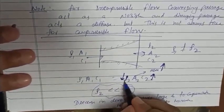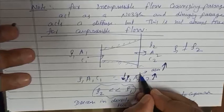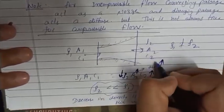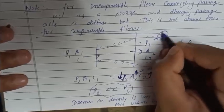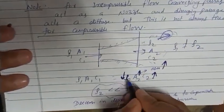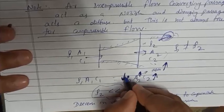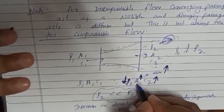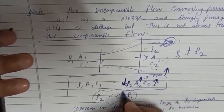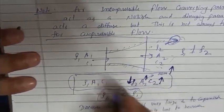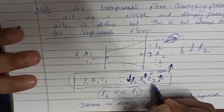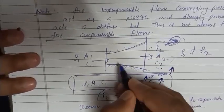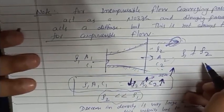In compressible flow, three parameters — density ρ2, area A2, and velocity C2 — are all variable. If we decrease the back pressure sufficiently, ρ2 decreases so much that to satisfy mass conservation, the velocity C2 must actually increase. This means a diverging passage in compressible flow can act as a nozzle, increasing velocity instead of decreasing it.